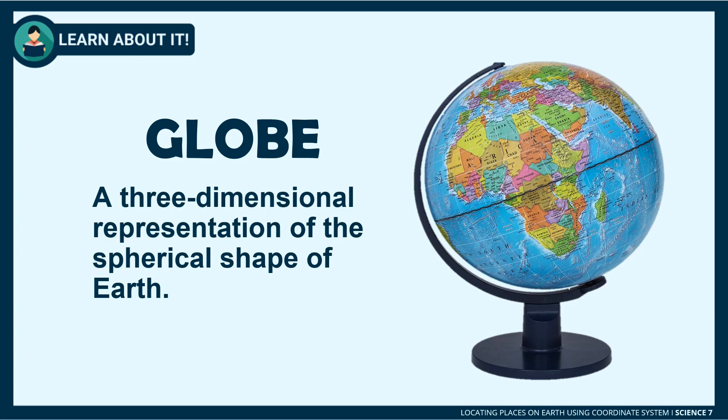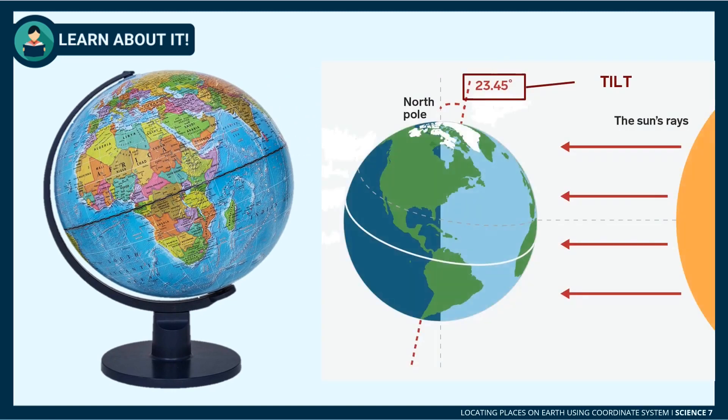On the other hand, a globe is a three-dimensional representation of the spherical shape of earth. A unique feature of a globe is earth's tilt with respect to its north and south poles. It also represents earth's position relative to the sun.